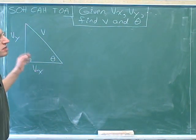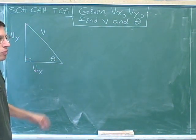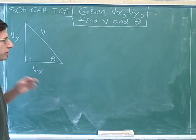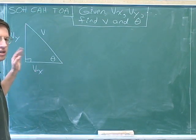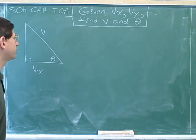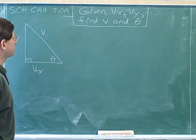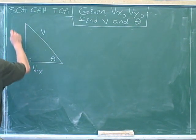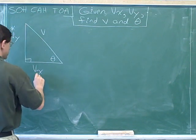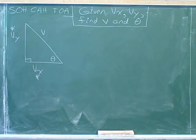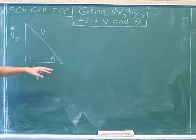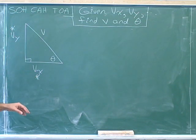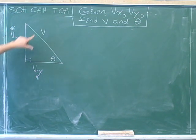If you had any trouble with this problem, I hope that your instinct was to try to be more systematic and to make an especially conscientious effort to use the notation that we've developed. One notation is that we use asterisks to indicate the initial information that we were given. In this case, we were given v sub x and v sub y. That's especially useful here because everything is a variable, so without the asterisks it would be hard to remember which variables we've been given and which we're treating as unknowns.